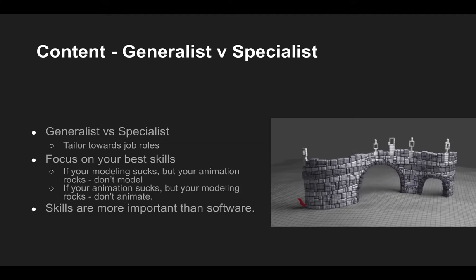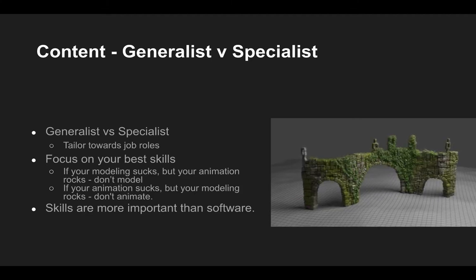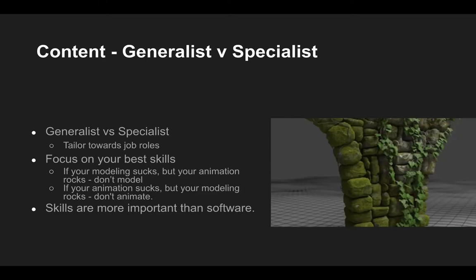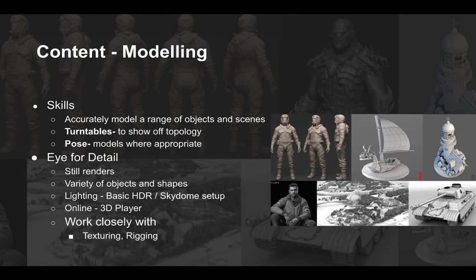Now that we've talked about some general rules for selecting content, let's look at hints and tips for particular roles. When looking at roles, we generally want to look at the more junior roles within any given department, as those are the roles most likely being applied for. Starting with modeling: junior modelers often start with simple props, move to more complex objects, and then on to hero objects. Modeling is sometimes an entry level role and you need to demonstrate that you can model accurately a range of different objects and scenes, requiring an in-depth knowledge of 3D modeling software.